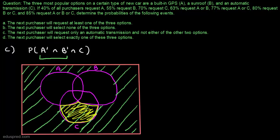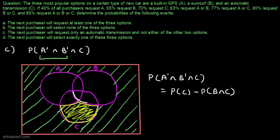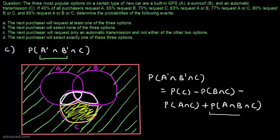From the Venn diagram, P(Aᶜ ∩ Bᶜ ∩ C) = P(C) − P(B ∩ C) − P(A ∩ C) + P(A ∩ B ∩ C). We subtract P(B ∩ C) and P(A ∩ C) from P(C), then add back P(A ∩ B ∩ C) to compensate for double subtraction of that overlapping area. Now we need to plug in the probability numbers, but these intersection probabilities are not directly given, so we must find them first.